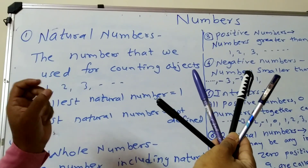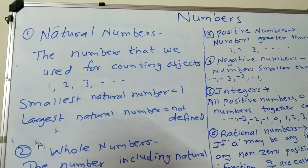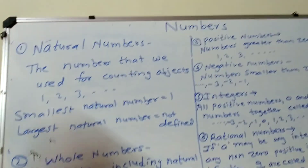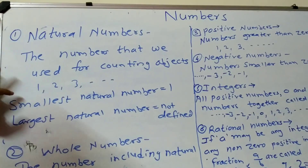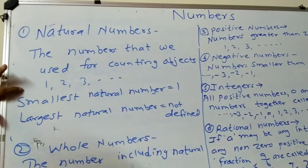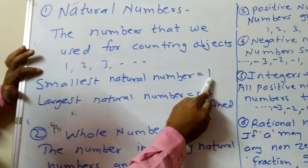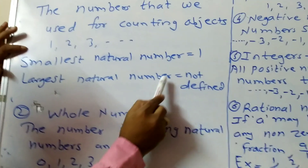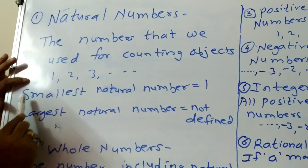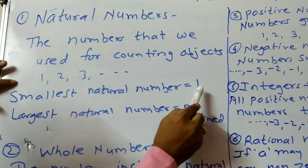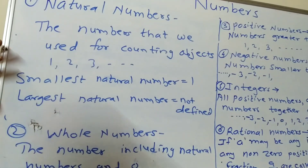The numbers we use for these pens — that is 1, 2, 3, 4, etc. — are called natural numbers. Therefore, the smallest natural number is 1 and the largest natural number cannot be defined, because natural numbers start from 1.